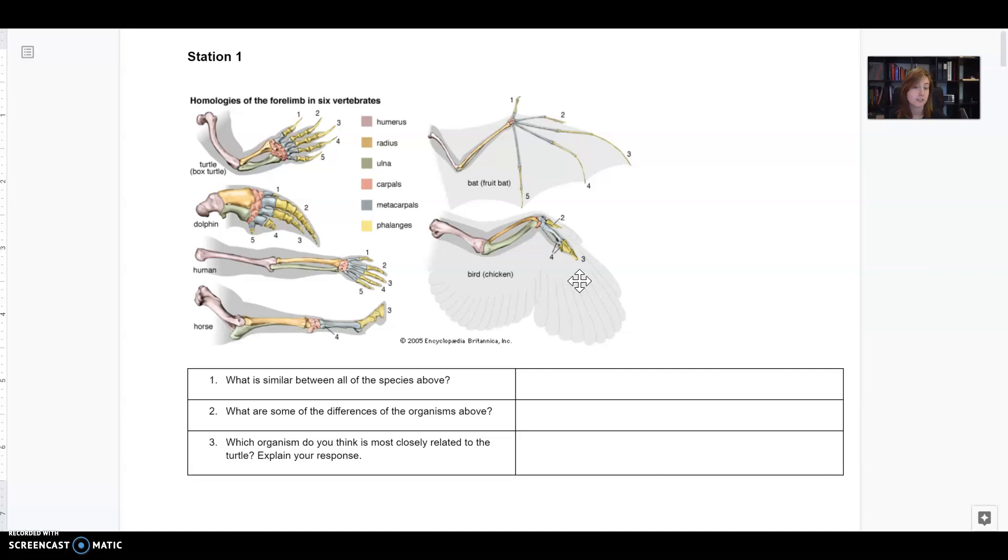Now the bones are slightly different sizes and shapes but they have the same structure because they come from a common ancestor millions of years ago. That common ancestor had five finger bones and so now all the animals that descended from that common ancestor also have five finger bones. This is evidence of evolution.